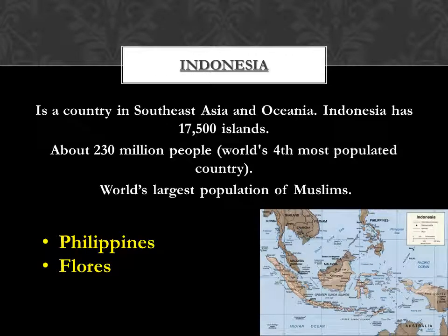So what is Indonesia? Basically it's a country in Southeast Asia, but a country that's in the ocean. There are about 17,500 islands in Indonesia with 230 million people living on those different islands. That makes it the fourth most populated country in the world.